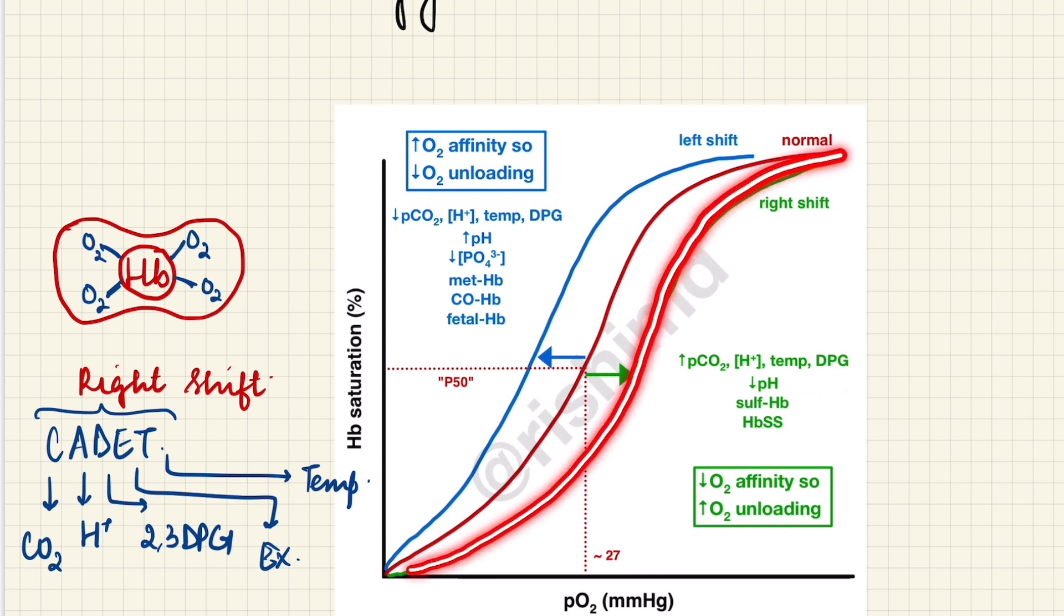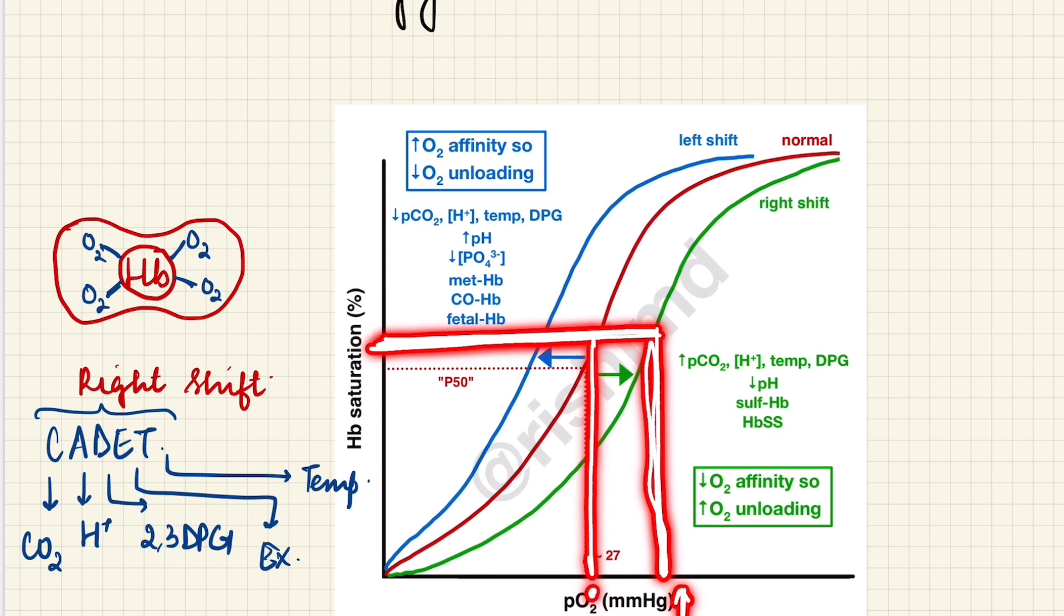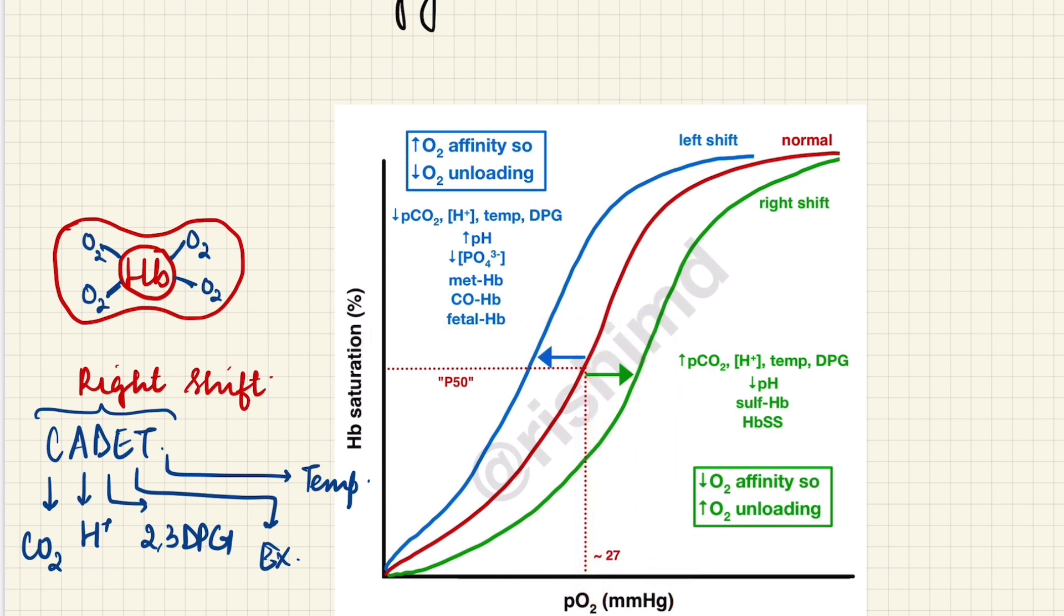Now how is it decreasing? See, if the curve was here normally, now the curve is here. That means, for example, at this value of saturation, the pressure should have been somewhere here. Now for this same value of saturation, the pressure is somewhere here, so increased pressure is required for oxygen to bind to the hemoglobin and give us a particular saturation.